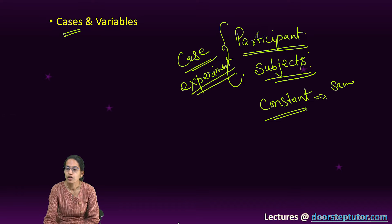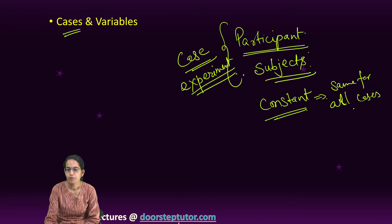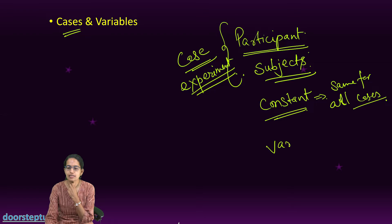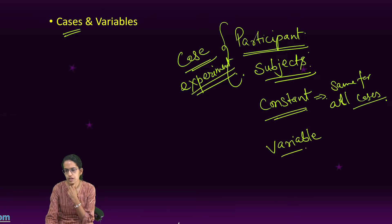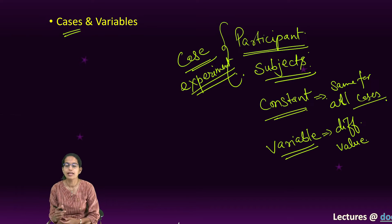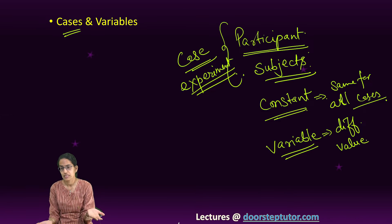The second is variable. Variable is one which takes different values, so the values would change and therefore we call this as variable. Variable, as the name suggests, has tendency to vary.